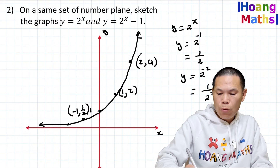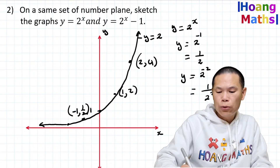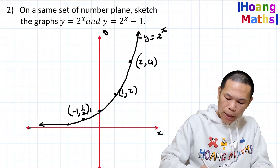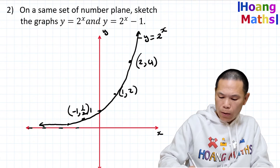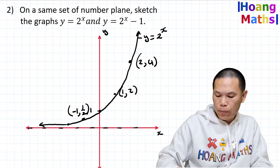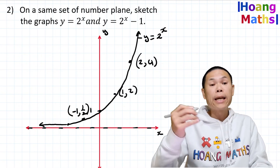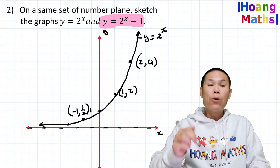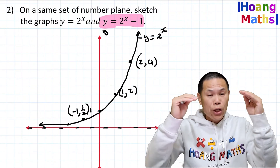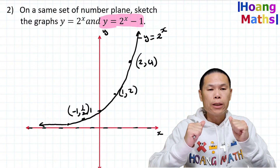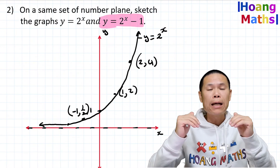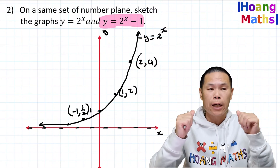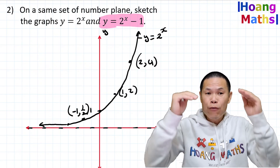That is y = 2^x with horizontal asymptote y = 0. Now let's sketch y = 2^x - 1. Subtracting 1 shifts the whole graph down one unit. If it were plus one you'd move up one unit; minus five you'd move down five units.